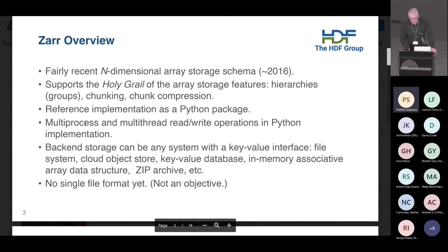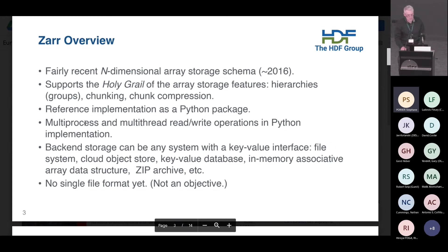I don't know how many people here are familiar with Zarr, but I would describe it as a fairly recent storage schema for multi-dimensional arrays. I think it was first formulated in 2016 — don't quote me on that — but definitely in the late 2010s. As I like to call it, it's the holy grail. It supports those three most liked and desired features when storing multi-dimensional arrays: groups, chunking, and chunk compression.